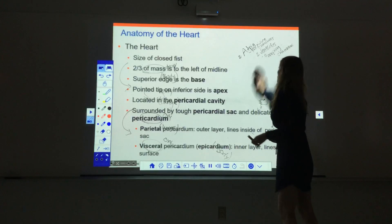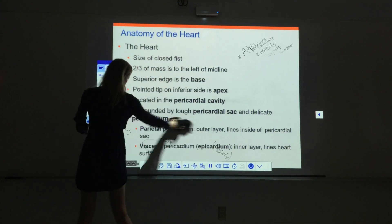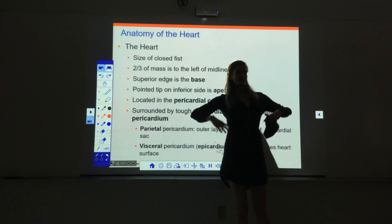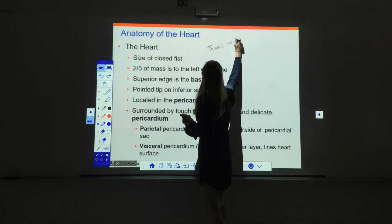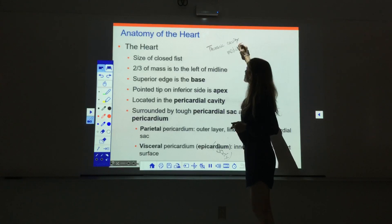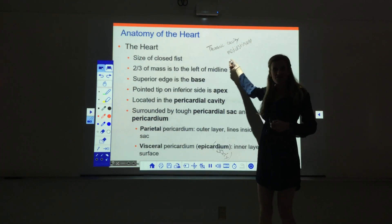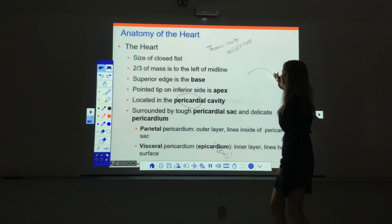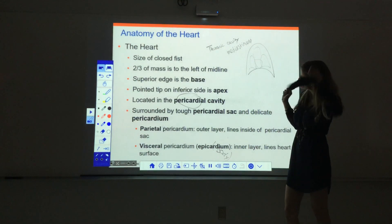Looking at general anatomy of the heart: the heart is about the size of your closed fist. It sits up in the chest cavity — the thoracic cavity — in between the lungs. The space in between the lungs is called the mediastinum. At the very bottom, we have the pericardial cavity — the heart sits inside the pericardial cavity. The heart sits posterior to the sternum — behind the sternum — but it's not perfectly centered. About two-thirds of the mass is actually to the left of midline.